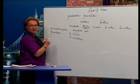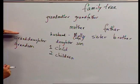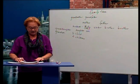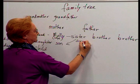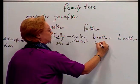One, two, three, four levels. We can also say that my sister is aunt. Aunt. And uncle. Uncle.